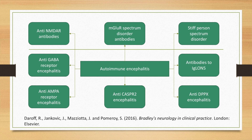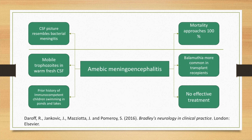In amoebic meningoencephalitis, the CSF picture resembles bacterial meningitis — neutrophilic predominance, cell count may be more than 1000, glucose is low, protein is high, and pressure is also high. However, mobile trophozoites are seen in warm fresh CSF, and there may be a history of children swimming in ponds and lakes. Mortality in amoebic meningoencephalitis approaches nearly 100% and unfortunately there is no effective treatment.